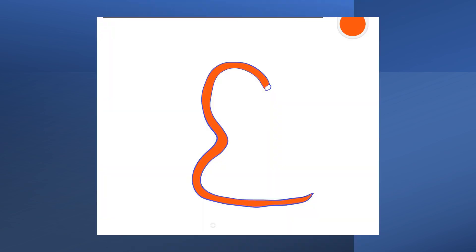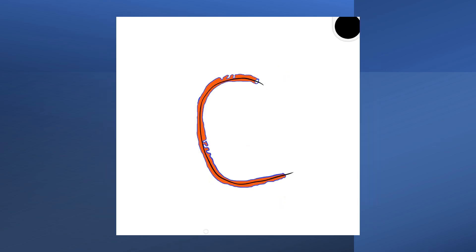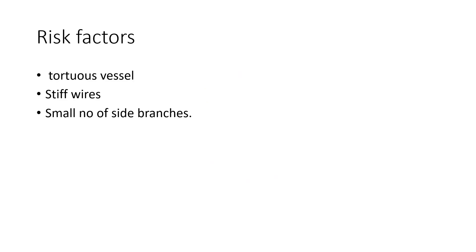This phenomenon is usually seen as a consequence of straightening the tortuous parts of a segment of the coronary artery. As seen in this depiction, passing a wire straightened this part and caused invagination of part of the wall of the vessel into the lumen. The risk factors are usually tortuous vessels, stiff wires, and the presence of a small number of side branches.